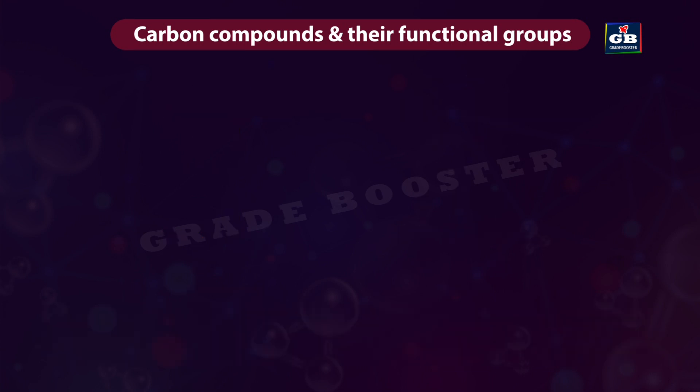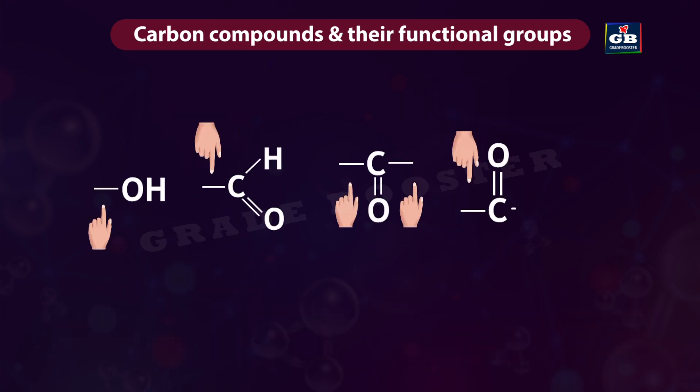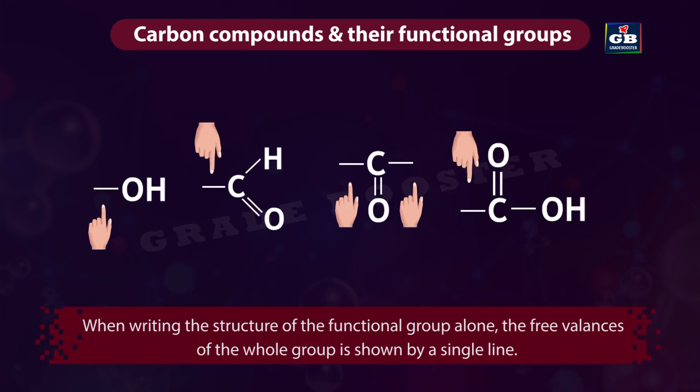When writing the structure of a functional group alone, the free valence of the whole group is shown by a single line.